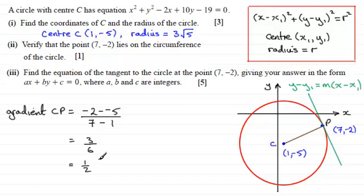So using the perpendicular gradient rule, the gradient of the tangent must be minus 2. We'll just put it in here. Therefore, gradient of tangent equals minus 2.